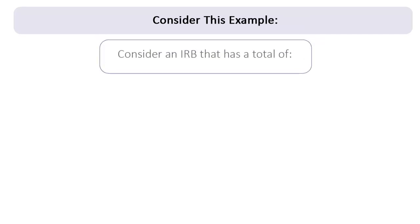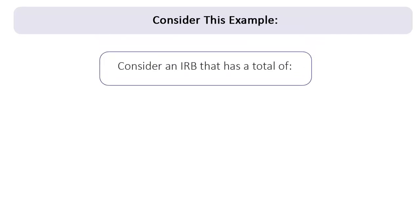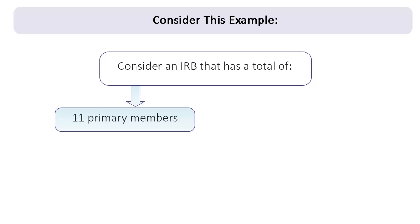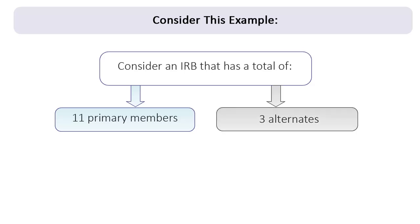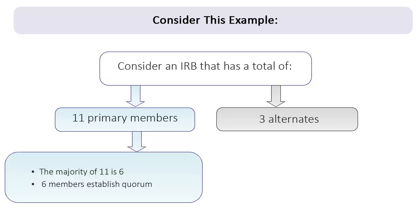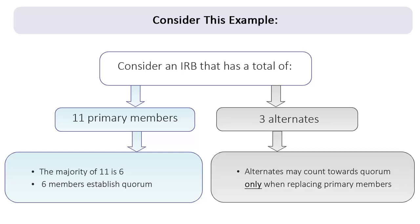For example, consider an IRB that has a total of 11 primary members and 3 alternates on its roster. They will use the number of primary members—11 in this case—to determine the minimum number of members who must be present to fulfill quorum. The majority of 11 members is 6, so 6 members must be present to establish quorum. Alternates may count toward quorum only when replacing primary members who are not present.